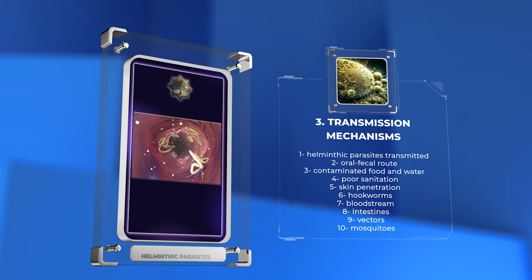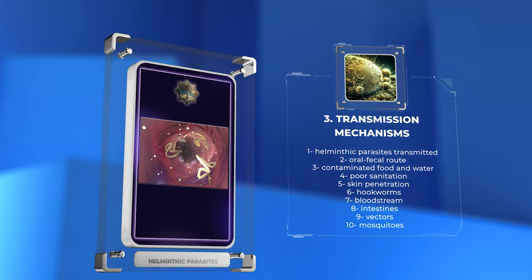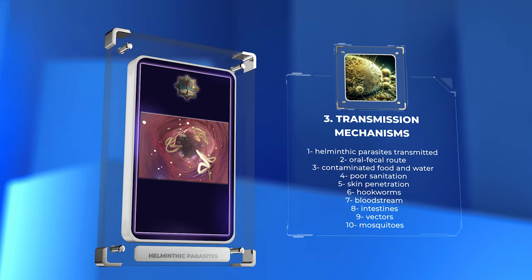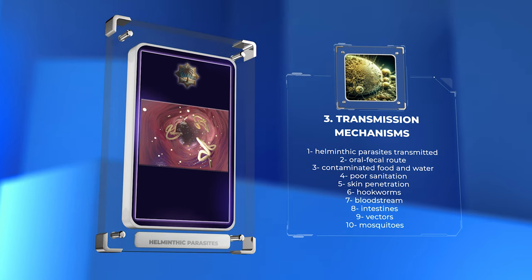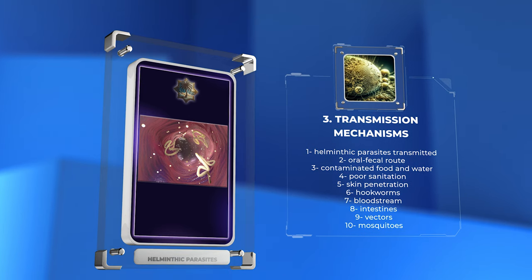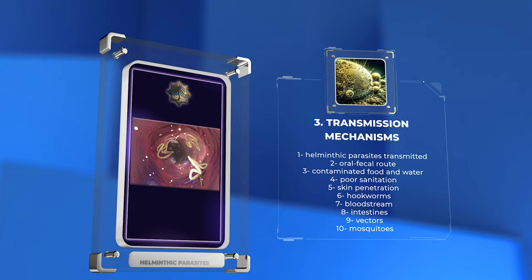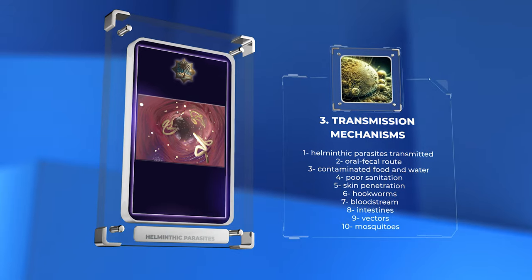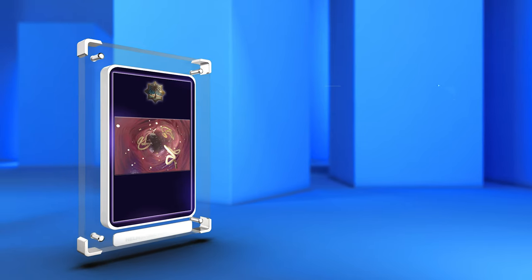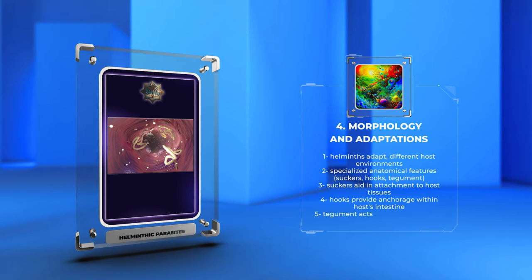Some helminths rely on vectors like mosquitoes and fleas. These arthropods carry infective stages of the helminths and transfer them to their hosts when feeding on blood. Understanding these transmission mechanisms is crucial for preventing and controlling helminthic infections.